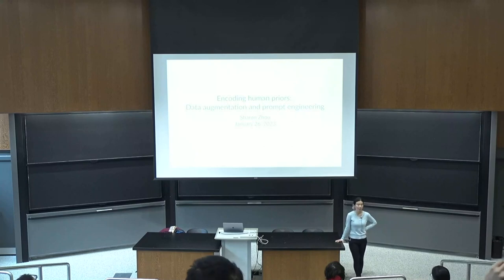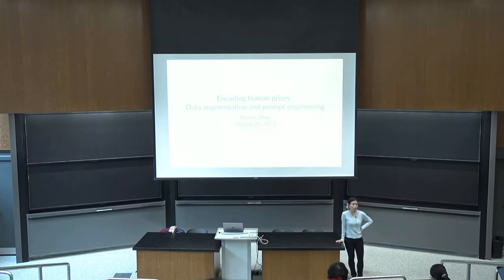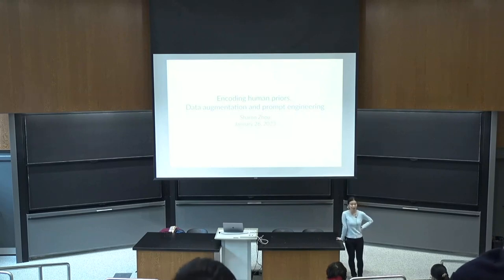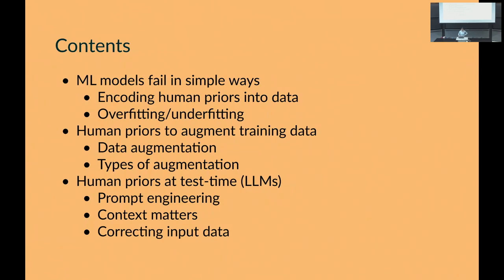Broadly, this means: how do we encode our knowledge of the world — human knowledge of the world — into data to improve our machine learning models? These are two very different techniques: one focused on training a model, and the other more appropriate at test time, which is prompt engineering. We'll go over why that even matters, because ML models do fail in very simple ways, then we'll talk about data augmentation, and then how to encode those priors using prompt engineering and adding context to a large language model — LLM.